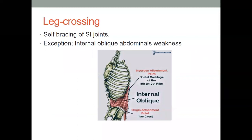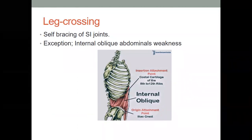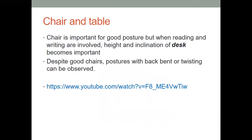Self-bracing is important for the SI joint — it protects against shear forces and biomechanical changes. The internal oblique muscle plays a very important role in the self-bracing of the SI joint. If the internal oblique muscle is weak, the SI joint's self-bracing will not be possible.